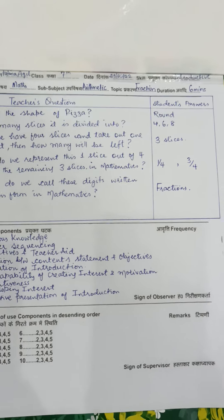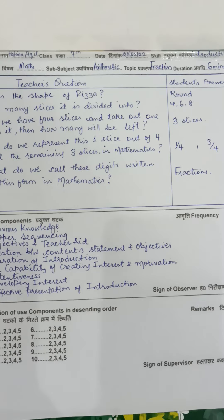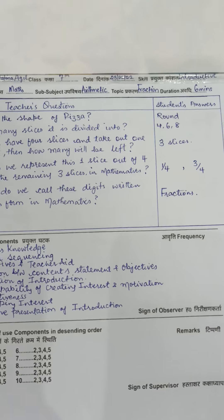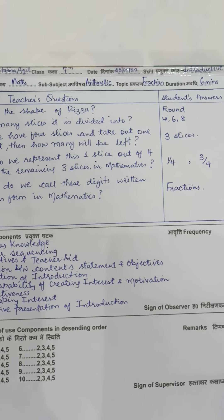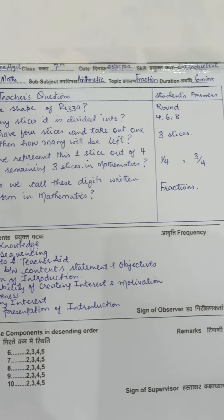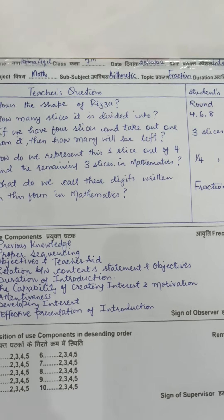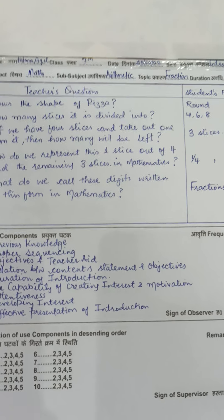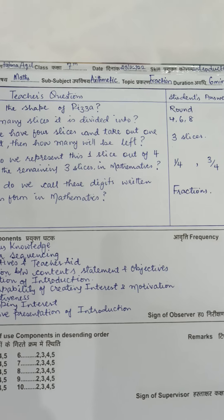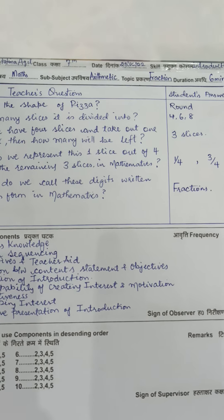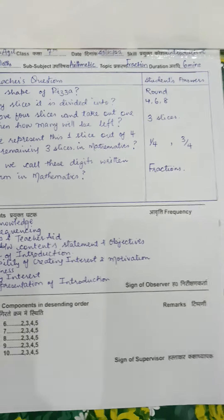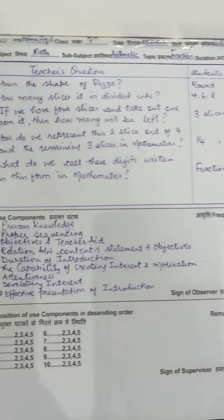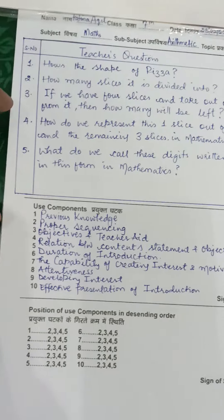We have five skills. The first one is the introductive skill, the second is the explaining skill, the third is the blackboard skill, the fourth one is the questioning skill, and the fifth one is the reinforcement skill.